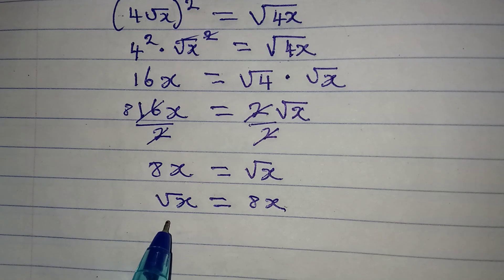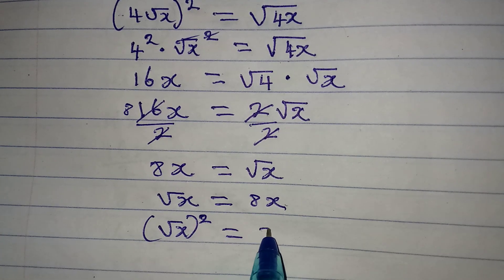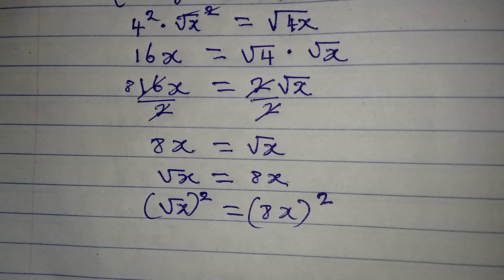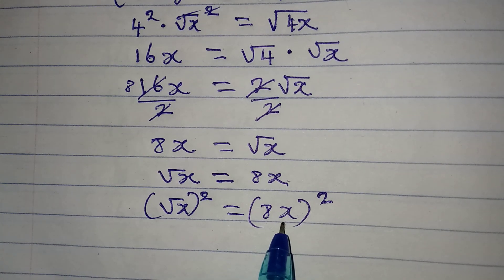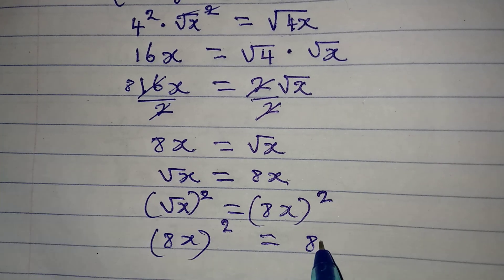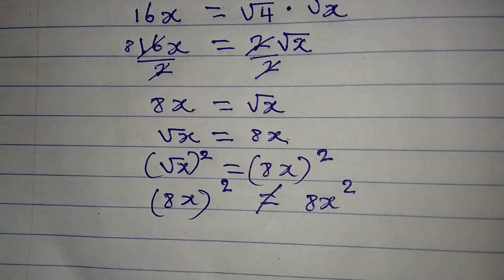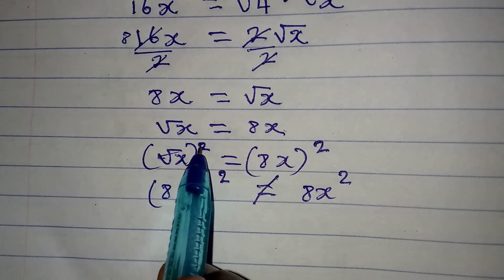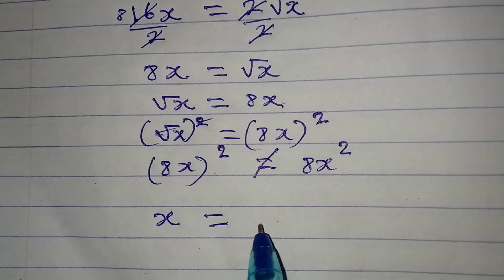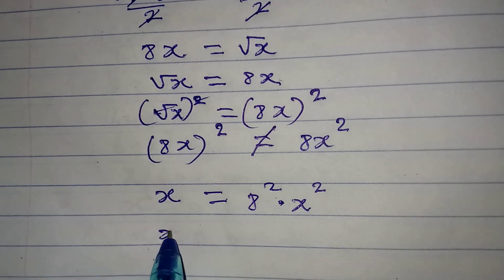We need to square both sides to remove the square root. We have the square root of x squared equal to (8x) squared. It's important to put 8x in parentheses — note that (8x)² is not the same as 8x². Squaring, the square root cancels on the left, giving us x equal to (8x)².